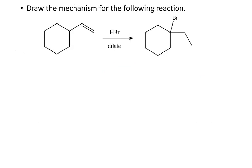Let's do an example of that. We want to draw the mechanism for the following reaction. Normally we would have expected the bromine to add here, but in fact it's added here. So we probably had a carbocation rearrangement.